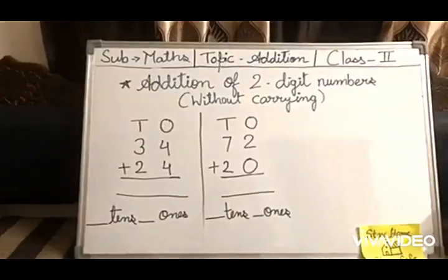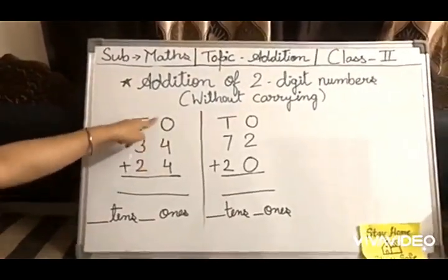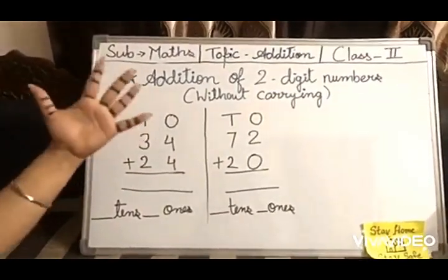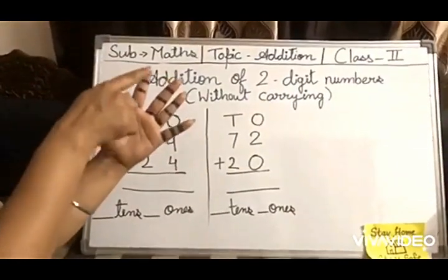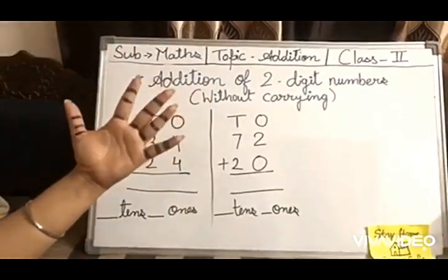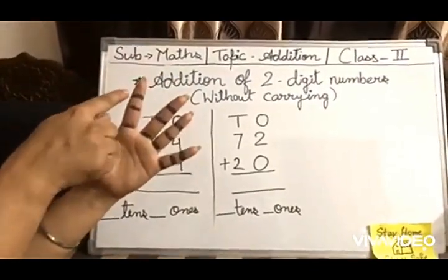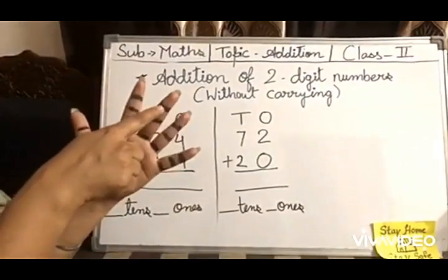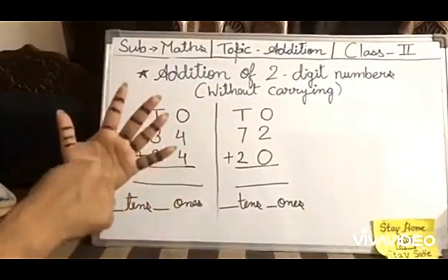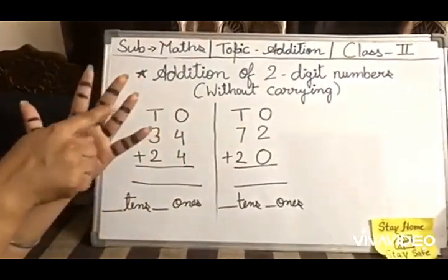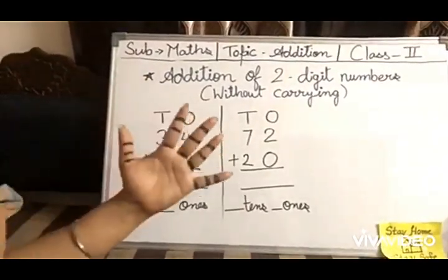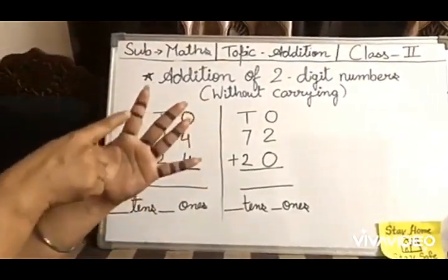So we will add four ones plus four ones, but how? In our palm we have fingers, and on our fingers we have small lines. With the help of these lines we can add these numbers. We should start from here: one, two, three, four - four lines. Now plus four, so add four more lines: one, two, three, four. So we have to count all lines together: one, two, three,